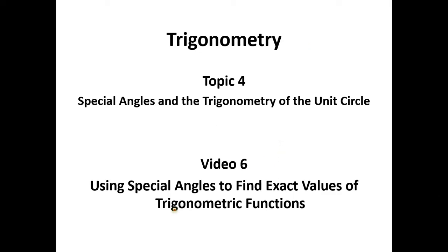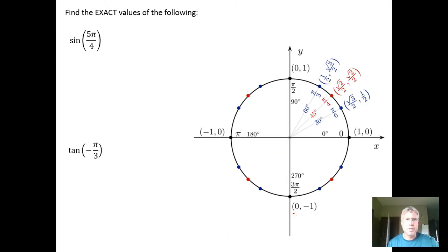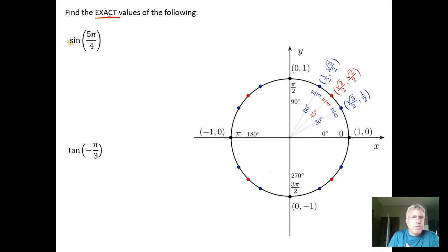In this video we're going to use special angles to find the exact values of trigonometric functions. For our first example we want to find the exact value for the sine of 5π/4. There's no degree symbol, so we know that we're talking about radians.